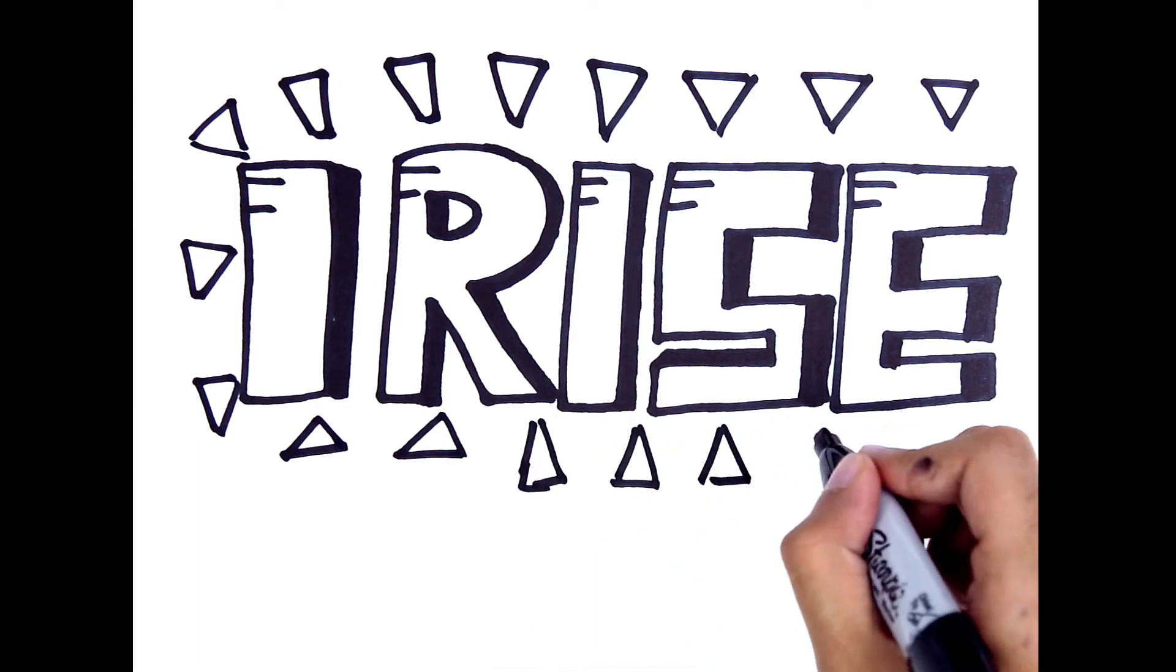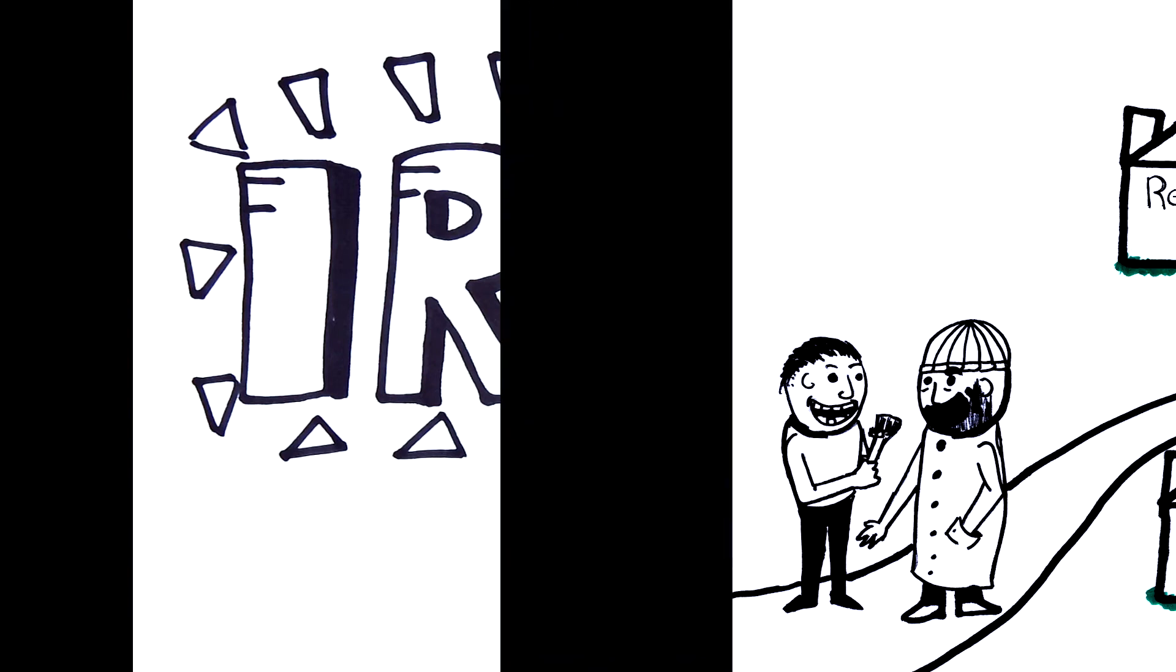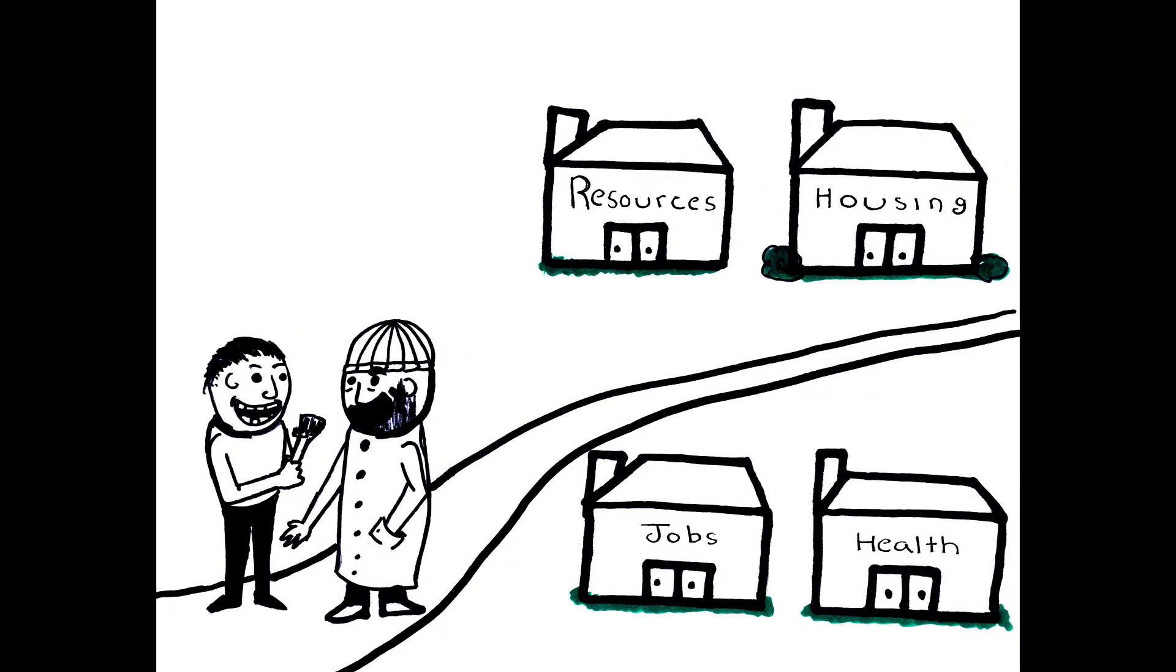Once the candidate is deemed a part of the organization, they are immediately made available to four different committees: the Committee of Resources, the Committee of Housing Accommodations, the Committee of Health and Self-Improvement, and the Committee of Job Acquisition.